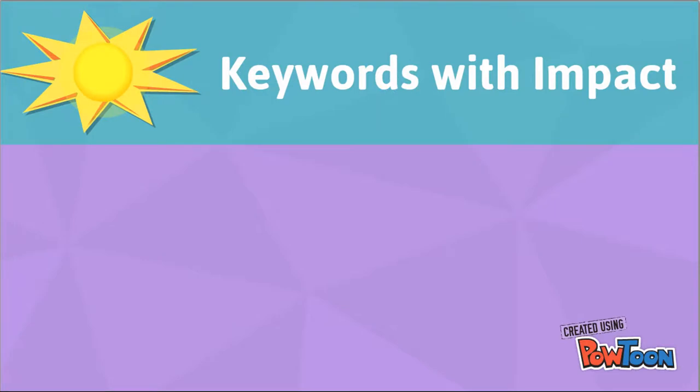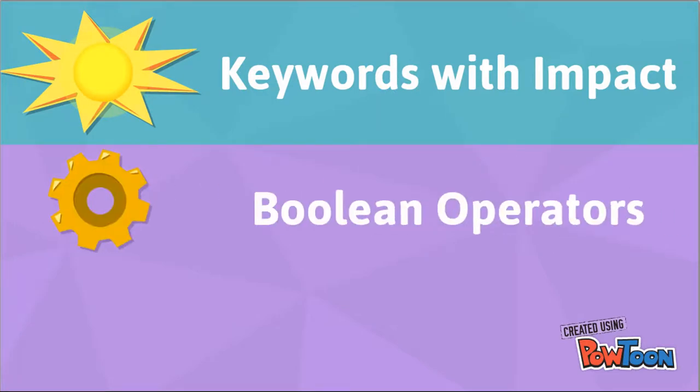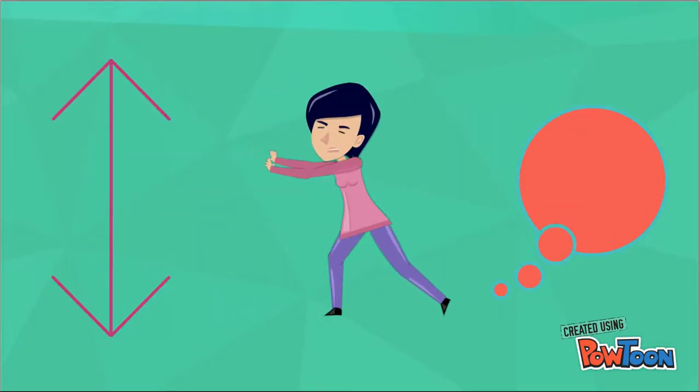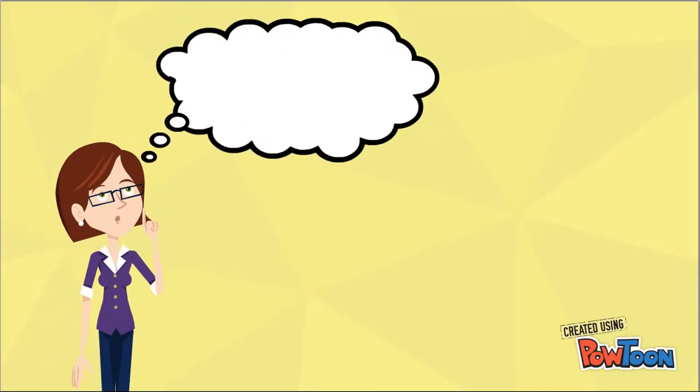To effectively search databases, we must use keywords with impact, link our keywords with Boolean operators, and apply appropriate limiters. But the most important trick is to remain flexible, persistent, and think creatively when our search doesn't work out. When this happens, reflect on our search and ask: why wasn't my search effective, and how can I modify it to retrieve different results?